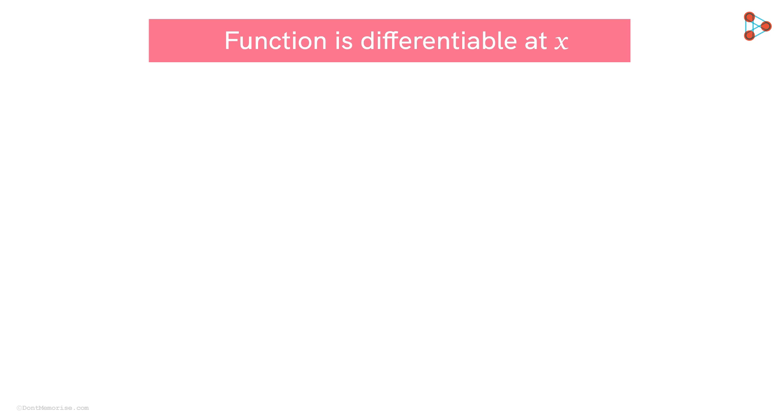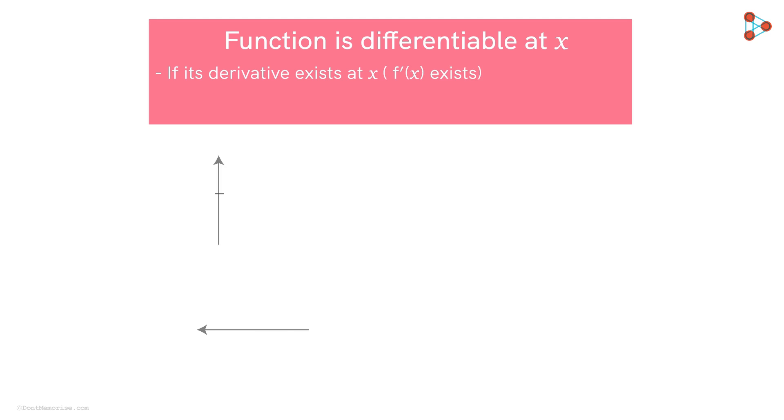Geometrically, what does it mean to say that a function is differentiable at a point? We say a function is differentiable at a point if its derivative exists at that point. And we also know that geometrically, the derivative corresponds to the slope of a tangent line.